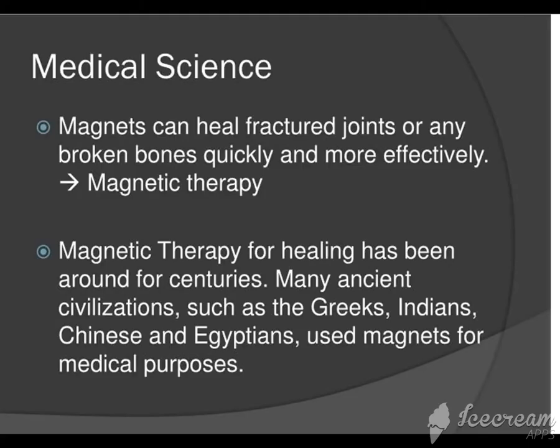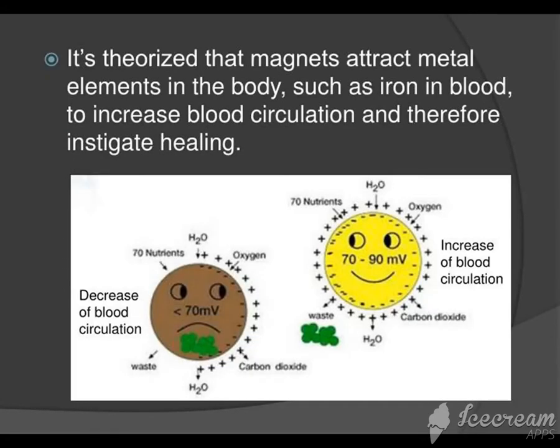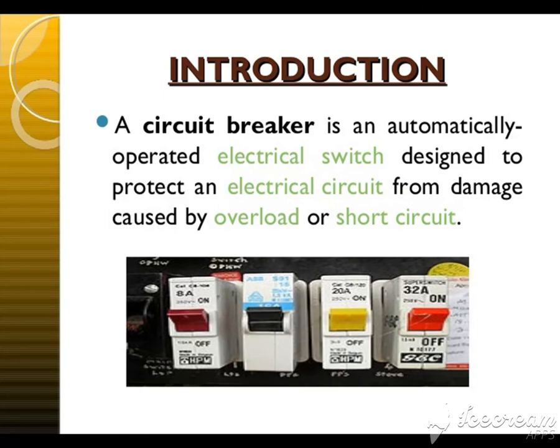In medical sciences, magnets can heal fractured joints or broken bones quickly and more efficiently. Magnetic therapy is now being used to heal or cure patients. Our blood also contains iron, which is a magnetic material, and magnets help to increase blood circulation.